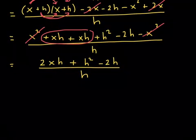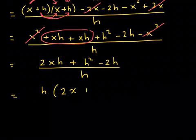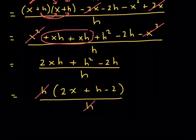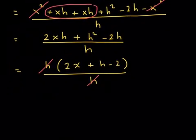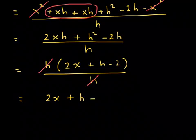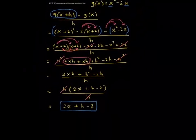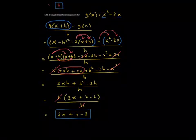Factor out the common factor of h from the numerator: h times (2x plus h minus 2), all over h. Dividing out the common factor of h gives the final answer of 2x plus h minus 2. This is the difference quotient for the quadratic function g of x equals x squared minus 2x.